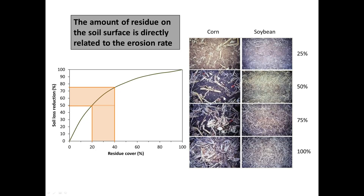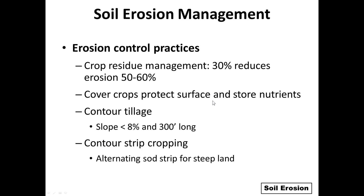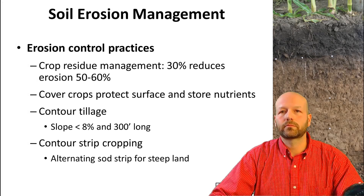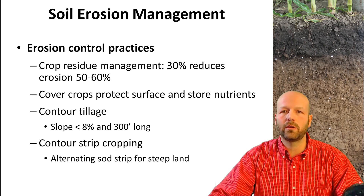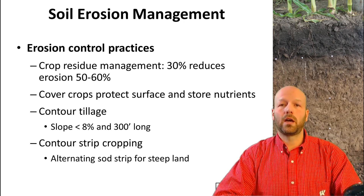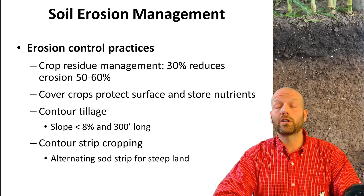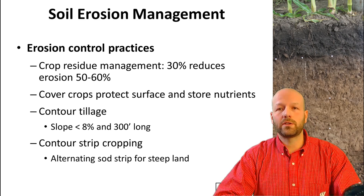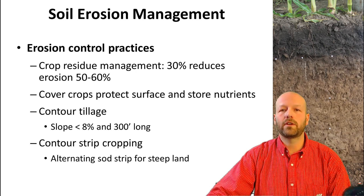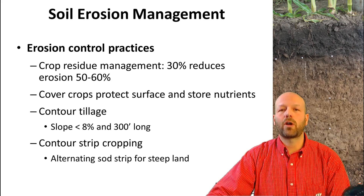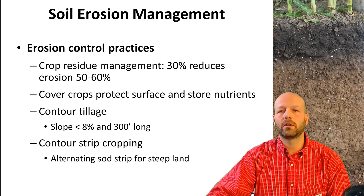Even 50% residue doesn't look like a whole lot — you can also see 75% and 100% residue. Now let's talk about erosion management. 30% residue on the soil surface can reduce erosion by 50% to 60%, though that depends on conditions. Cover crops can be a great way to protect the soil when it's most vulnerable, and they also help recycle nutrients and provide biological benefits. Another way to control erosion is by doing tillage on the contour, or using contour strips for cropping — alternating strips of different crops including sods to break the slope on the landscape.